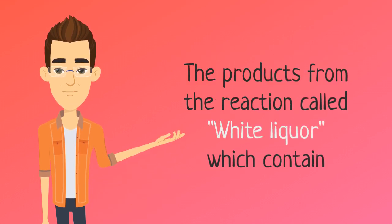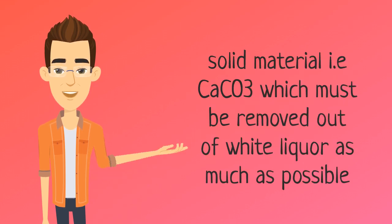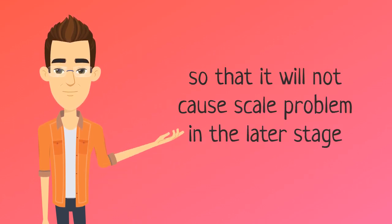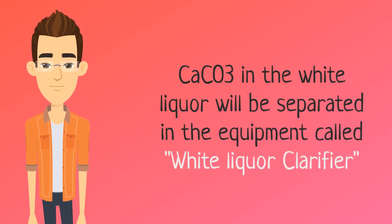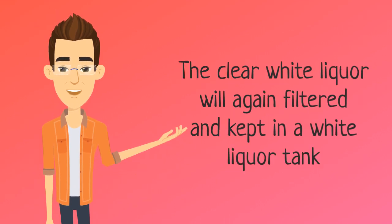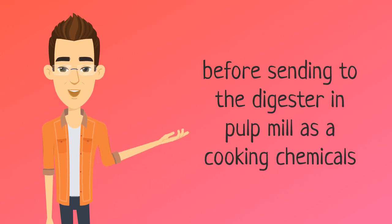The product from this reaction is called white liquor, which contains solid material — calcium carbonate — that must be removed as much as possible so that it will not cause scale problems in later stages. In the same time, we are able to recover more calcium oxide to be reused. Calcium carbonate in the white liquor is separated in equipment called the white liquor clarifier. The cleared white liquor is then filtered and kept in the white liquor tank before being sent to the digester and pulp mill as cooking chemicals.